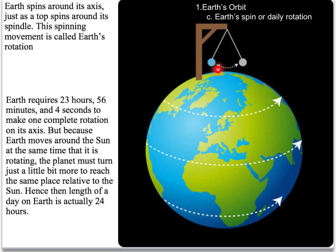The Earth spins on its axis, and that spinning movement is called the rotation of the Earth. It actually takes a little less than 24 hours — the Earth requires 23 hours, 56 minutes, and 4 seconds to make one complete rotation. But because the Earth also revolves around the sun, it actually takes 24 hours for one day to get back into the right position relative to the sun, which is why it seems like 24 hours.